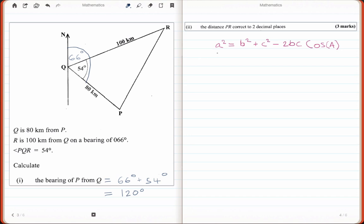And this is the cosine rule here. A squared is equal to B squared plus C squared minus 2BC cos A. So A squared is going to be equal to, B is going to be my 80, so 80 squared plus my C is going to be my 100, minus 2BC. That is 2 times 80 times 100 cos 54 degrees.